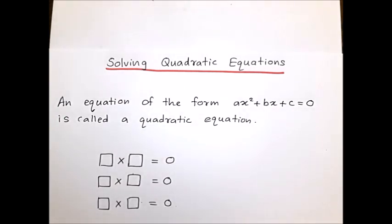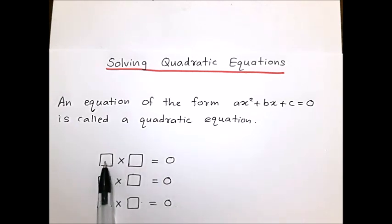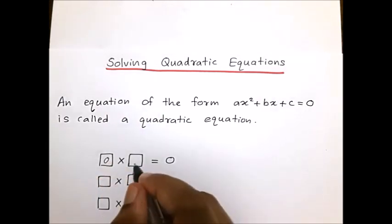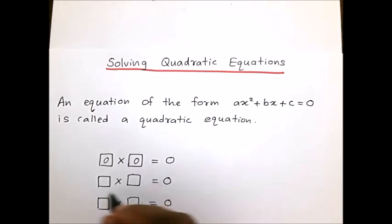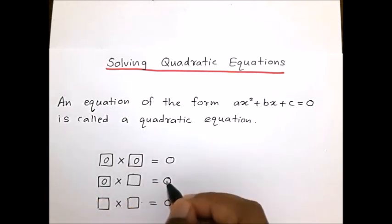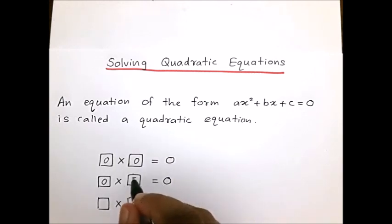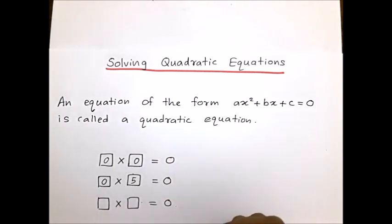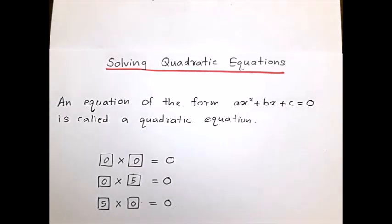Before solving quadratic equations, let us consider the following. When you multiply any two numbers and the answer is 0, what can these two numbers be? 0 multiplied by 0 is 0, or 0 multiplied by any number is 0. Any number multiplied by 0 is 0.